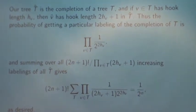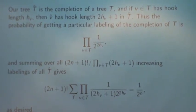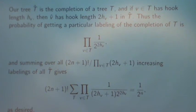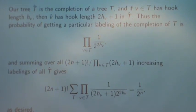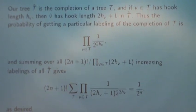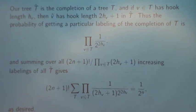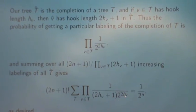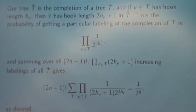And if it does, then our T-hat is the completion of another tree, and we need to only check the algebra. If a vertex had hook length hv in T, then it has hook length 2hv plus 1 in T-hat. So the probability we get a particular labeling of the completion of the tree T is the product over all the vertices of 1 over 2 to the 2hv. Now sum that over all increasing labelings of all T-hat, and we get 2n plus 1 factorial times the sum over all binary T, the product of 1 over 2hv plus 1 times 2 to the 2hv, equals 1 over 2 to the n. And that 1 over 2 to the n cancels out, providing the minus 1 factor that we needed.